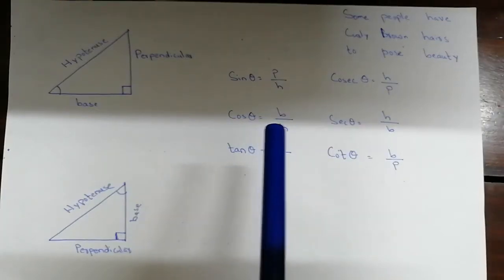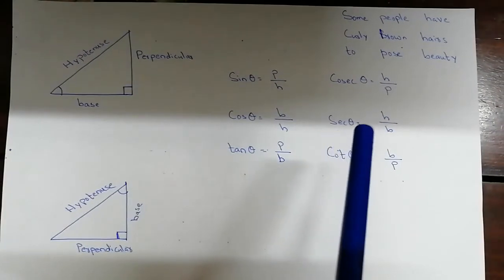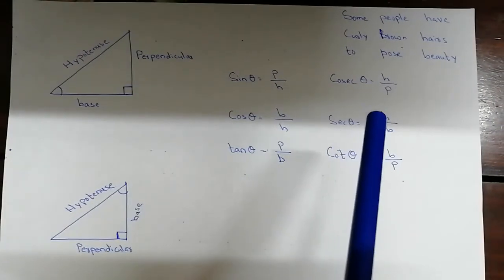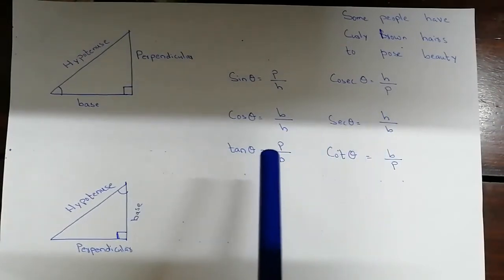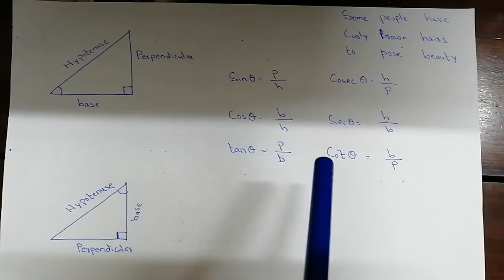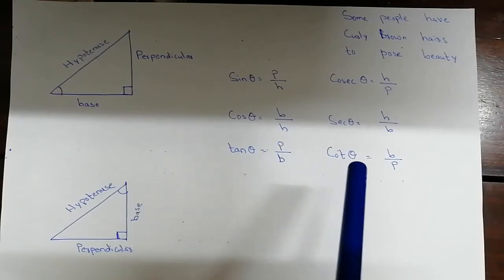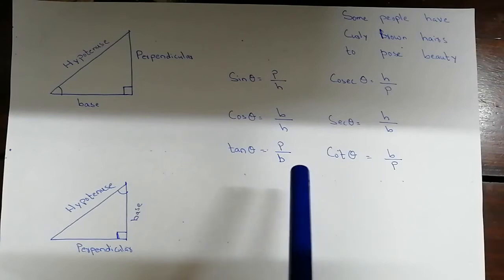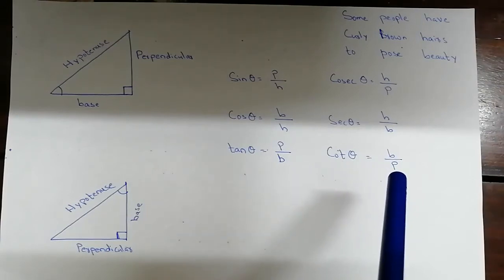Since sine theta equals perpendicular upon hypotenuse, cosec theta equals hypotenuse upon perpendicular. Similarly, sec theta equals hypotenuse upon base, and cot theta equals base upon perpendicular.